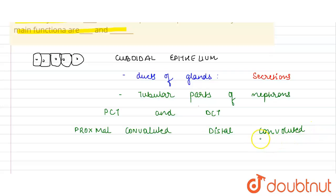So the epithelium found is the cuboidal epithelium. And can you tell me, in the nephron what is happening? The main function is that of absorption. So what are the main functions of cuboidal epithelium? Secretion and absorption. And they are found in the ducts of the glands and the tubular parts of the nephron.